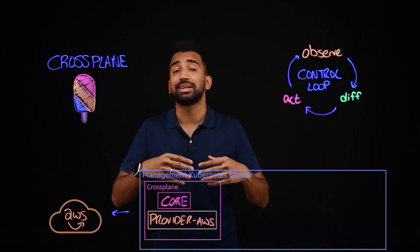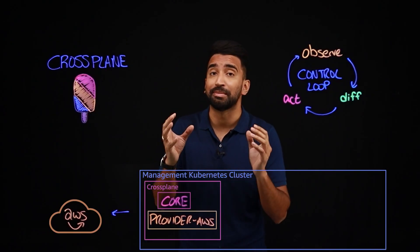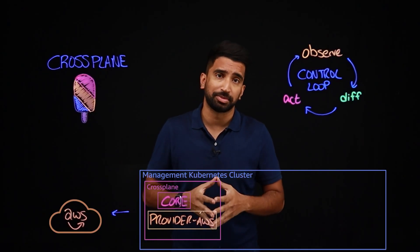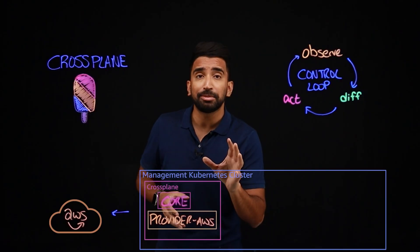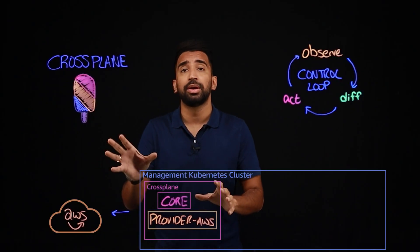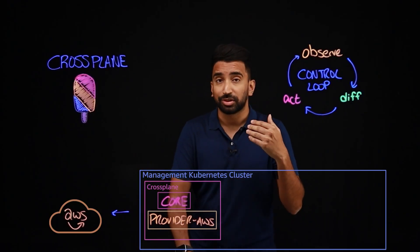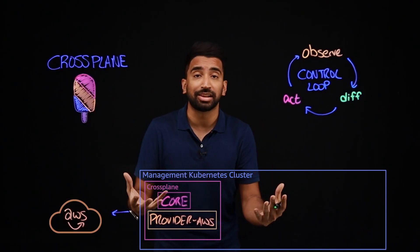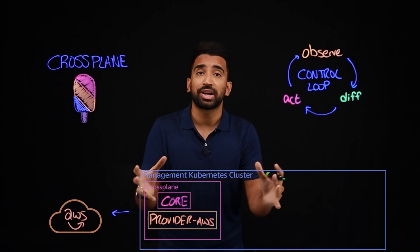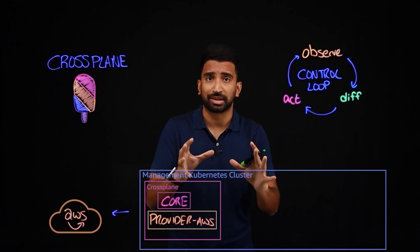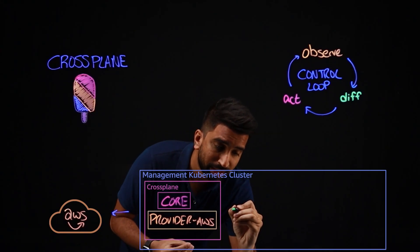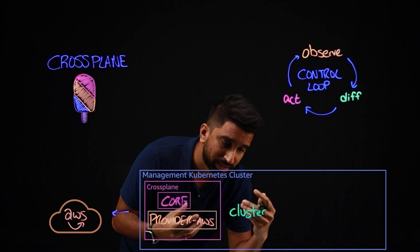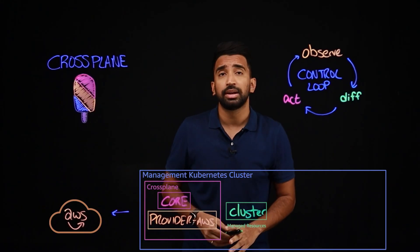All providers come with a set of managed resources, which are the lowest level primitives in Crossplane. They communicate directly with cloud provider APIs. For example, if we wanted to create an EKS cluster with our Crossplane management cluster, we could create a managed resource with the kind for the EKS cluster.